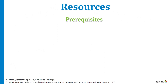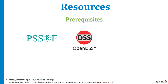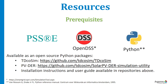Before installing TD-Cosyn on your computer, you need to install PSSE, OpenDSS, and Python. Then TD-Cosyn and the PVDER simulation utility are available as open-source Python packages from GitHub. Here are some useful links to our GitHub repositories where you can find detailed installation instructions and a user manual.